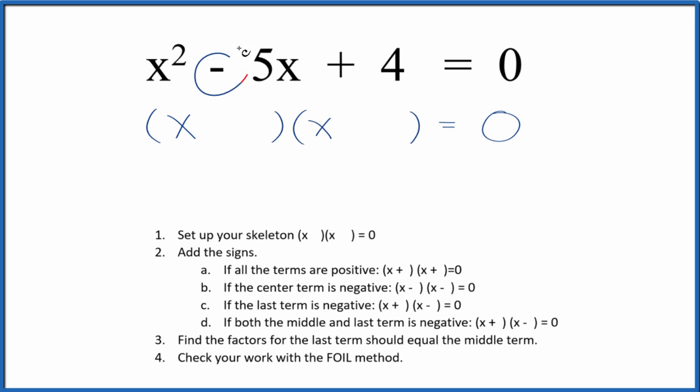Then once we've got our skeleton, we can add the signs in. If I look at the terms, I see I have a negative in the center here. In the middle there, if we have that negative, we're gonna put negative signs in our skeleton like this.